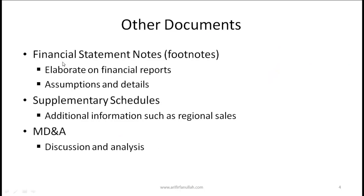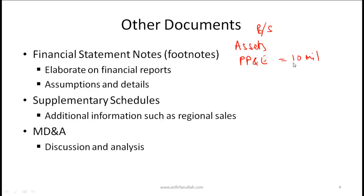Some other important documents: financial statement notes or footnotes. From an analysis perspective these are extremely important. For example, on a balance sheet you might see property, plant and equipment listed at 10 million. Associated with this is a lot of detail — what exactly the equipment is, how long it's been around, what depreciation method is being used — and that is what is explained in a footnote. To really understand a company's situation, it's important to carefully study the footnotes, where assumptions and details are also specified.